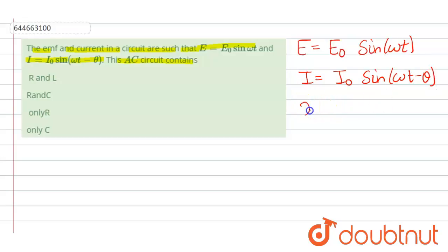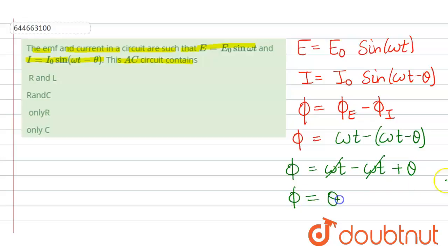So here first we find the phase angle by subtracting the phase of current from the phase of EMF. So that means phi will be equal to phi e minus phi i, and phi e can be written as omega t and phi i will be omega t minus theta, which on further solving we get omega t minus omega t plus theta. So phase angle comes out to be theta.